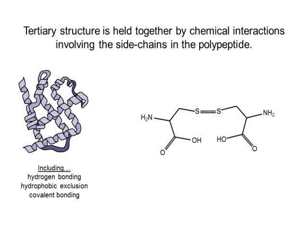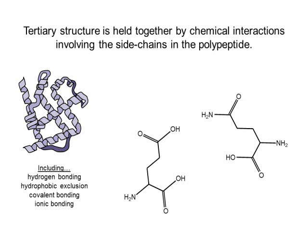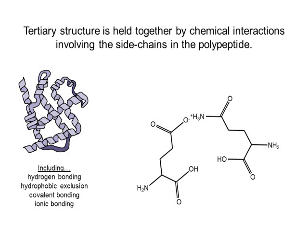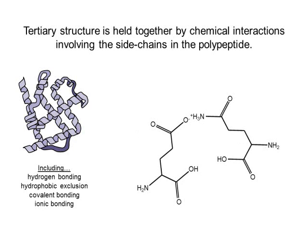Finally, ionic bonding can occur. In this case, we have glutamic acid on the left and glutamine on the right — glutamic acid being an amino acid with an acidic or carboxyl group in its side chain, and glutamine having an amino group, so acting as a basic side chain. Recall that when these side chains ionize, they develop opposite charges, and opposite charges attract. That opposite charge attraction is an ionic bond, which adds additional stability to the tertiary structure.